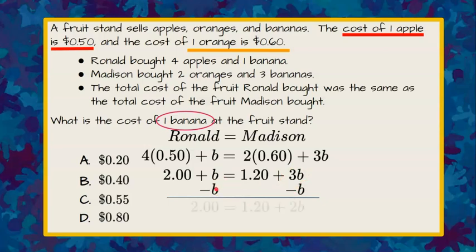This is a zero pair, leaving me $2.00 on the left equals $1.20. 3b subtract b is 2b.